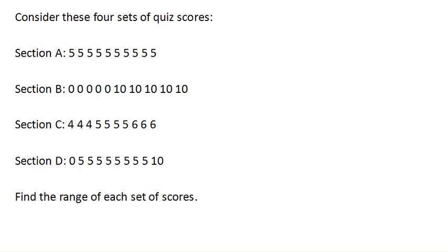So consider these four sets of quiz scores from four different sections of a class. A quick calculation will discover that the mean and the median of each of these data sets is five.